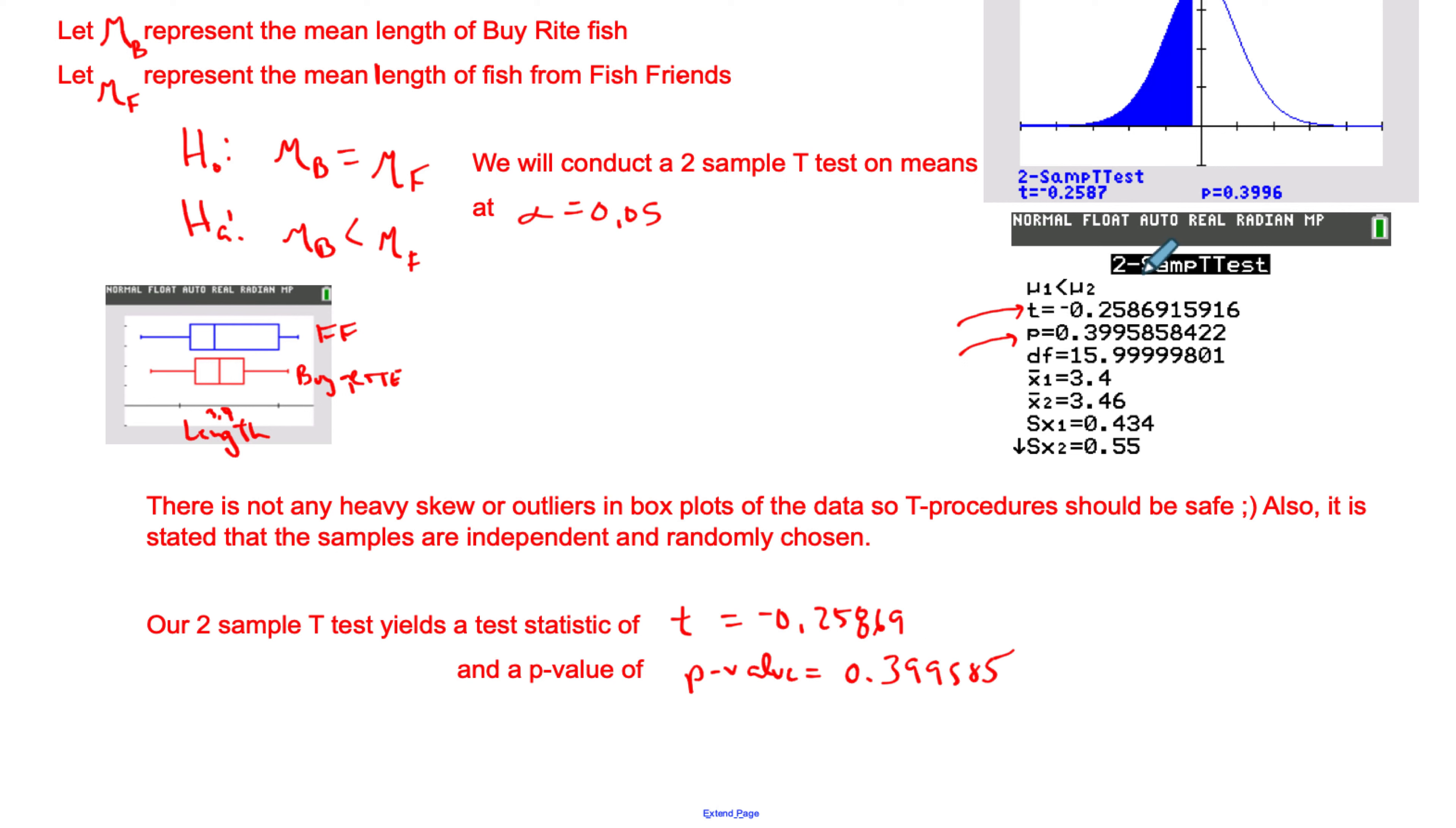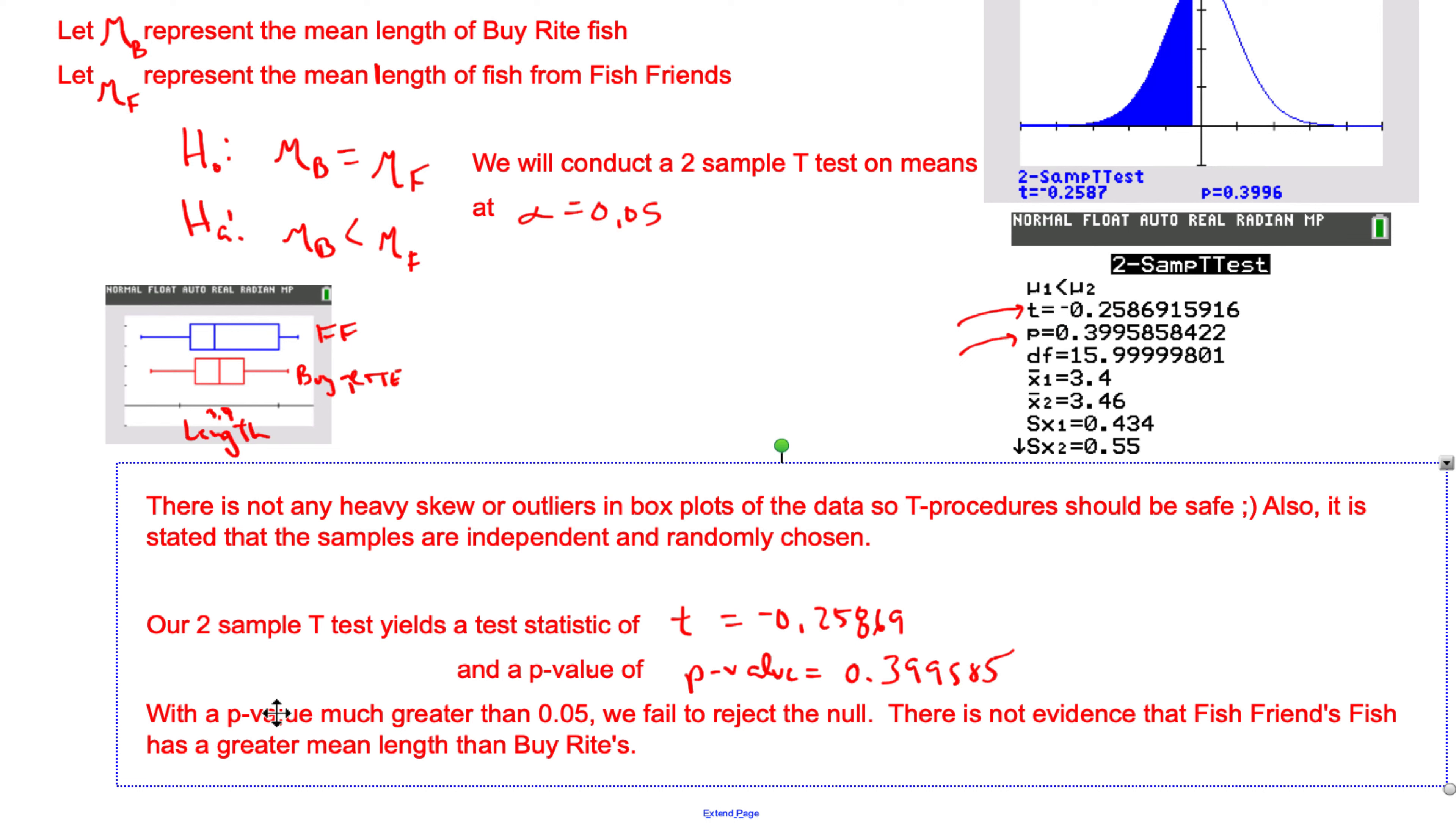All right, so we need to make a decision here. What do we do? You got two choices: you can either reject the null or fail to reject the null. Remember, if you're less than alpha, then you reject the null. But we are not less. We're not even close to alpha, so we fail to reject the null.